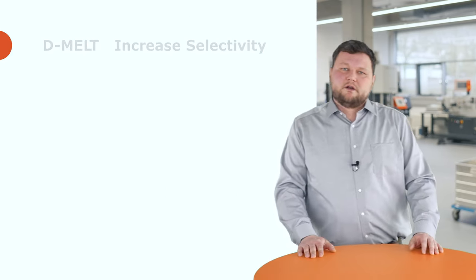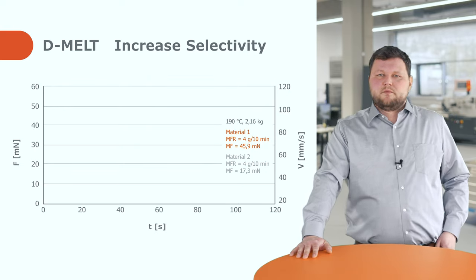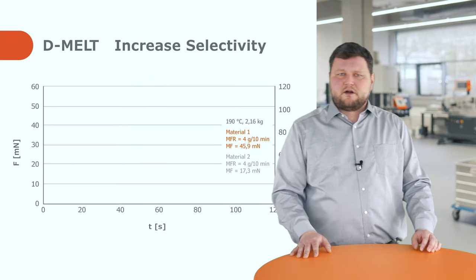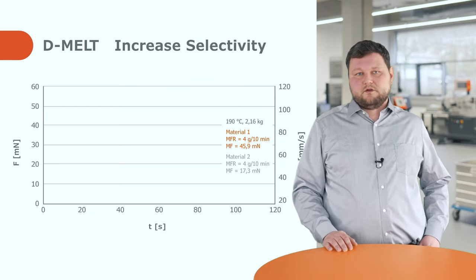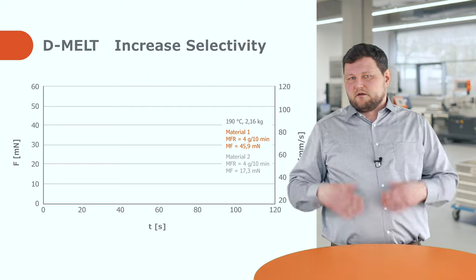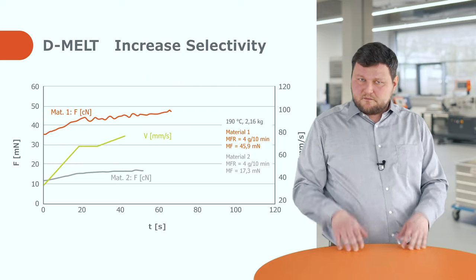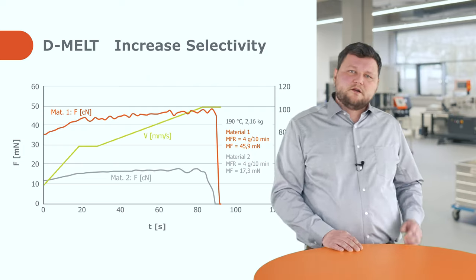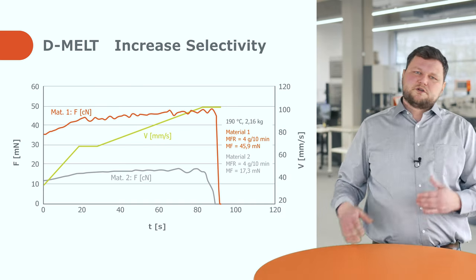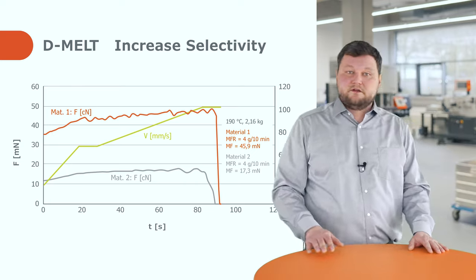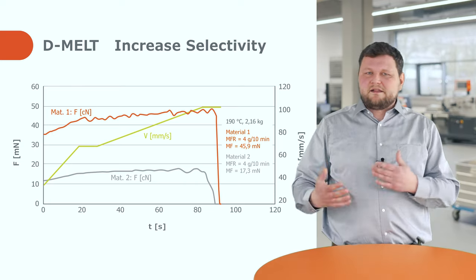Let's look at the application. We have an example with two LDPE grades measured at 190 degrees with this system. Both have a very similar MFR of roughly four, meaning the shear viscosity at lower speeds is pretty similar. But with the D-MEL result there is a big difference — material one shows a value nearly 2.5 times as high as material two. Both materials will show drastically different behavior in extrusion processes, and just melt indexing in this case would not show you any difference at all.